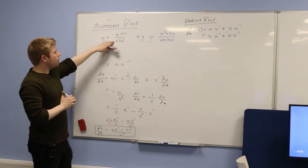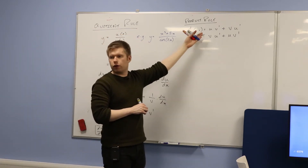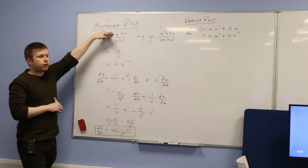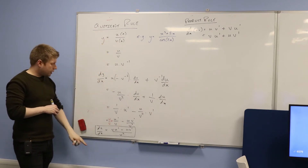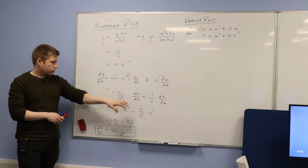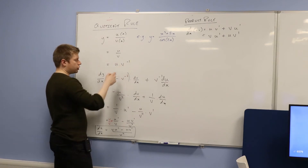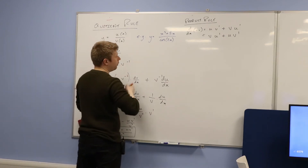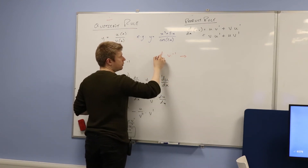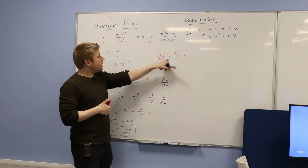So, in other words, the derivative of the quotient — two things being divided by each other — should be equal to this. Just bear in mind, before it didn't matter. With the product rule, it didn't matter which way u and v were written, whether u was first or v was first. But with this thing now, v is on the denominator. So u comes first on the numerator, v is on the denominator. This is the quotient rule.